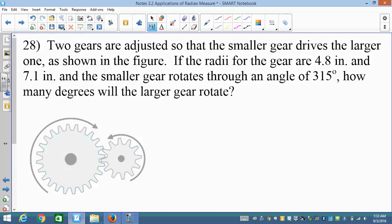Okay, last problem I believe we're going to try today. Two gears are adjusted so that the smaller gear drives the larger one, as shown in the figure. If the radii for the gear are 4.8 inches and 7.1 inches, and the smaller gear rotates to an angle of 315 degrees, how many degrees will the larger gear rotate? So we have a little conversation here that we have to go through, but I'm going to go ahead and get things going here first.